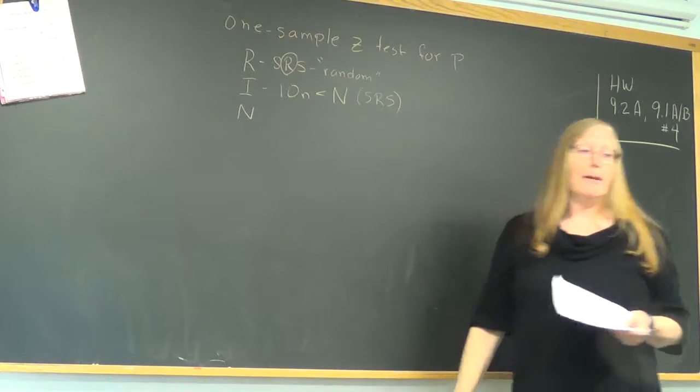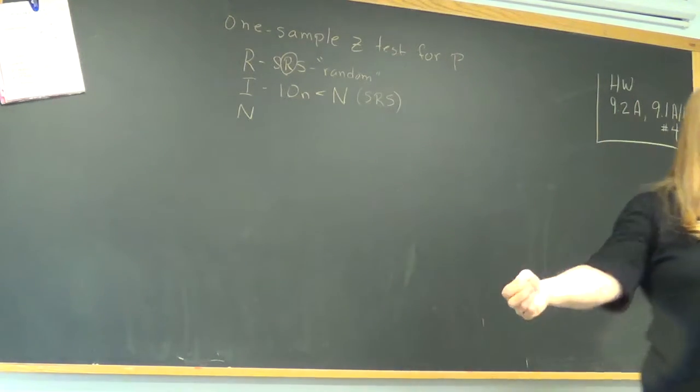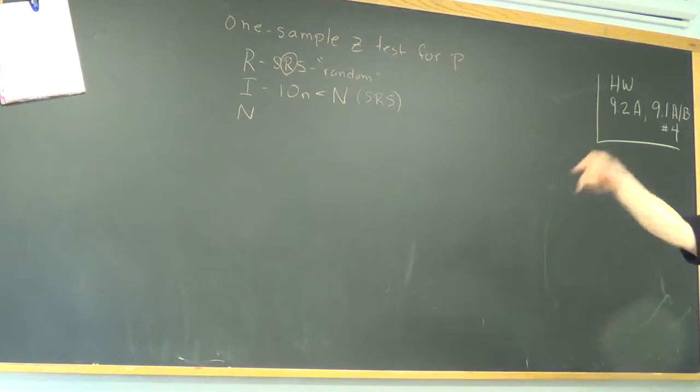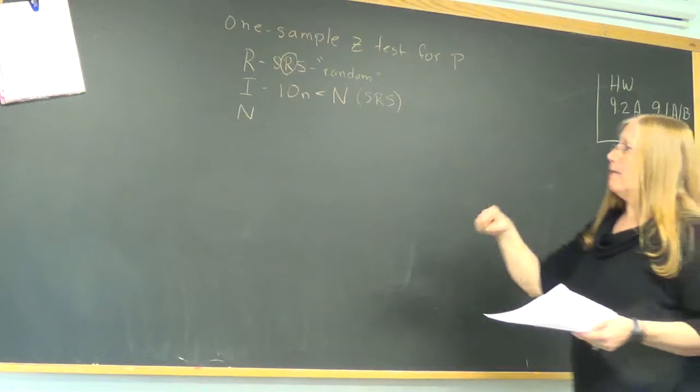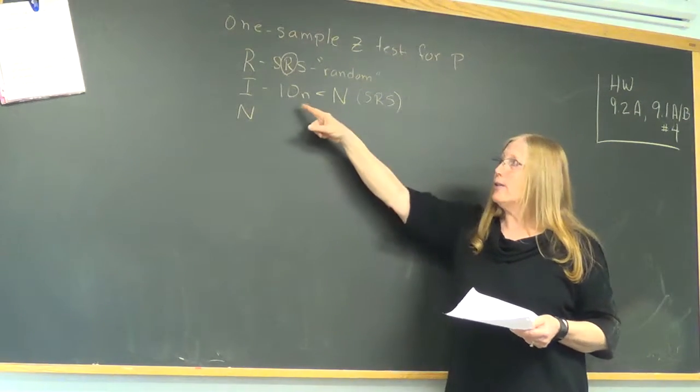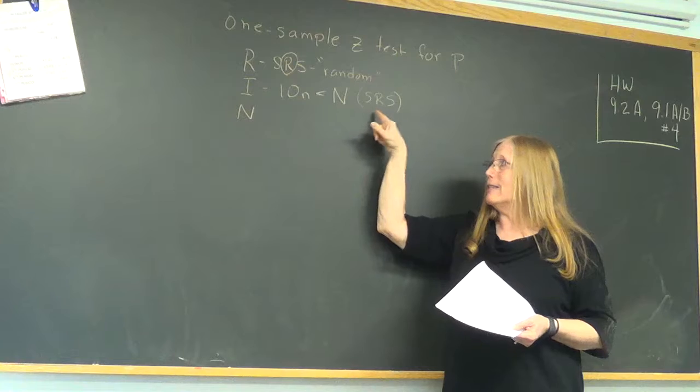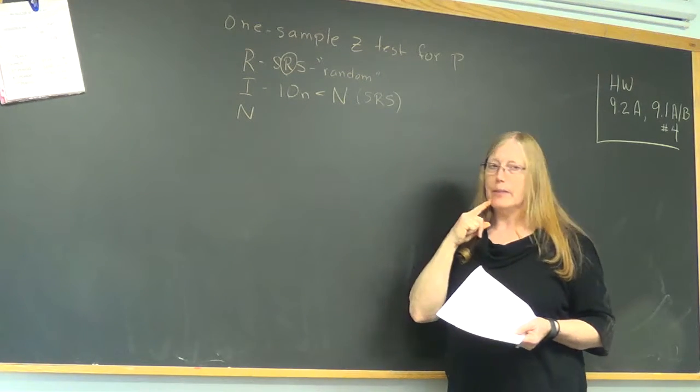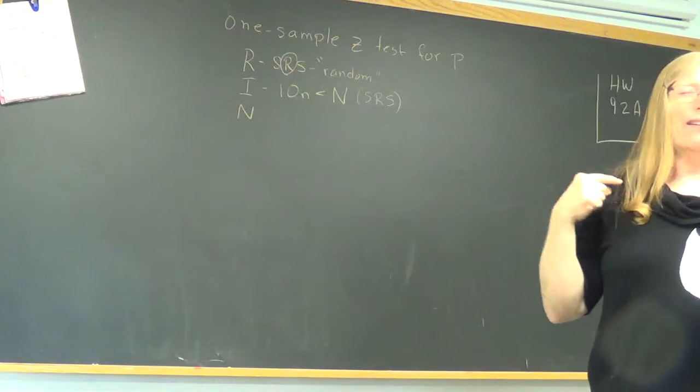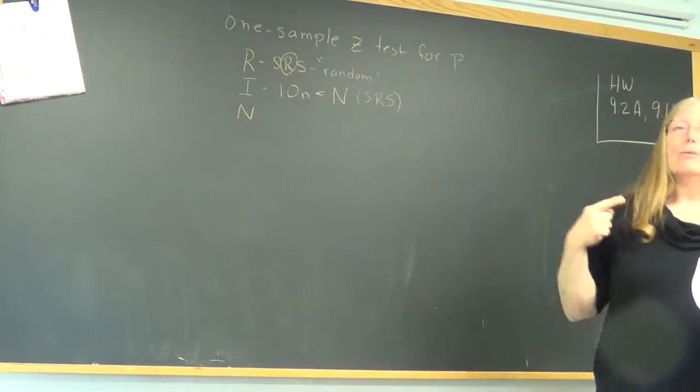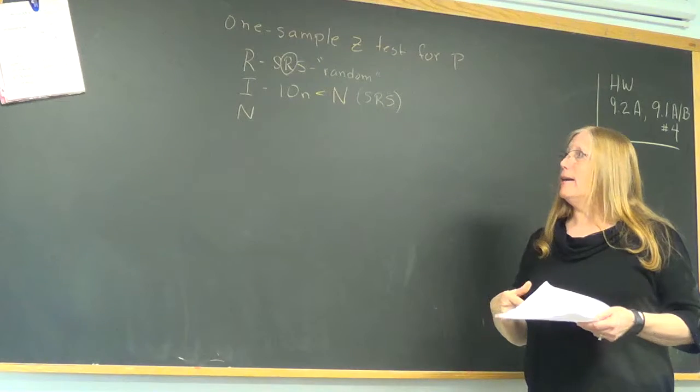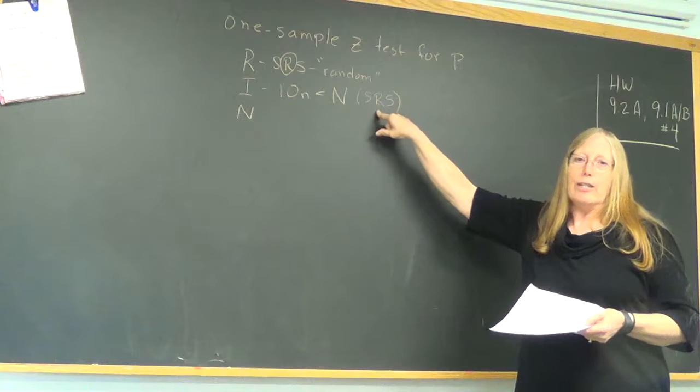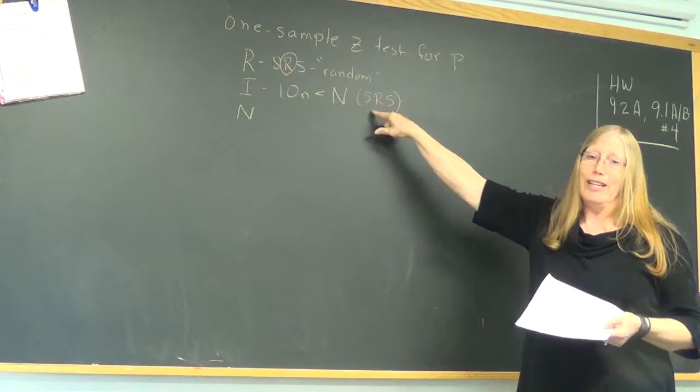Because it's truly not independent. If you have a simple random sample and you draw some numbers out, some values, some people, whatever, some individuals are drawn out, they are not replaced. So it's not truly independent. So we check this and it's very close to independent when we have a simple random sample.